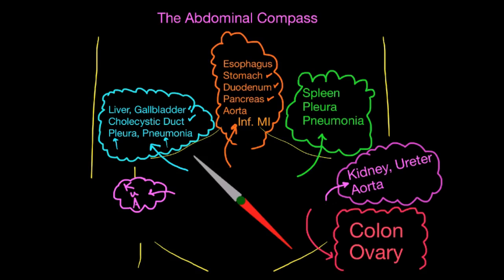In the left lower quadrant, the sigmoid colon lives here. There really is colon almost everywhere — ascending, transverse, descending, then sigmoid. Colitis can present with left lower quadrant pain. Diverticulitis tends to affect the sigmoid colon more than anywhere else, so you'd often see it here: colitis, diverticulitis, or a perforated diverticulum leading to abscess. In females, the left ovary is in the left pelvis — you could have a painful ovarian cyst, an ascending infection, or ovarian torsion, a vascular catastrophe where the ovary twists on itself and its blood supply is compromised.